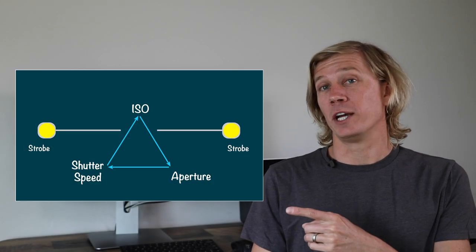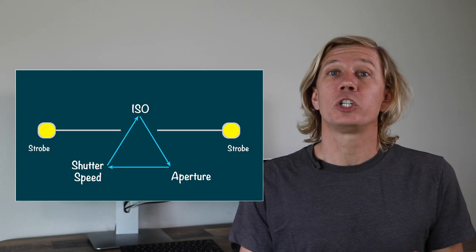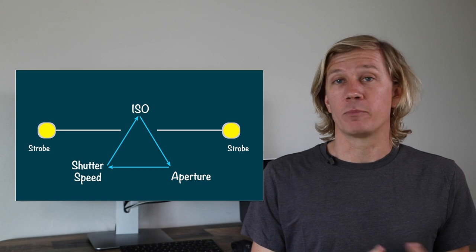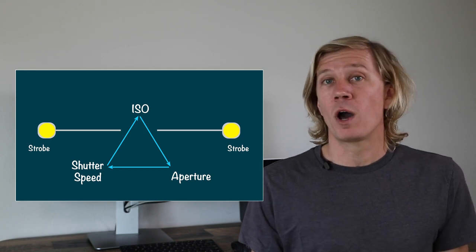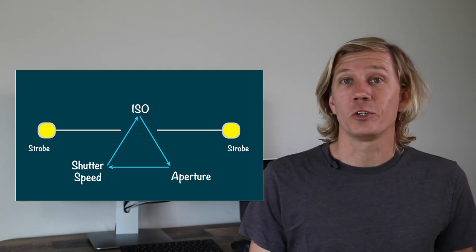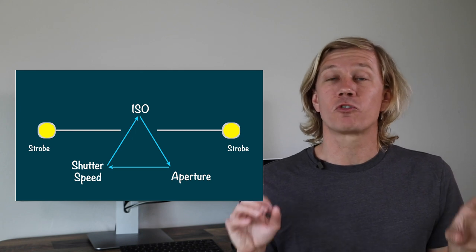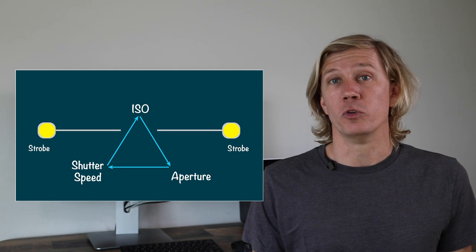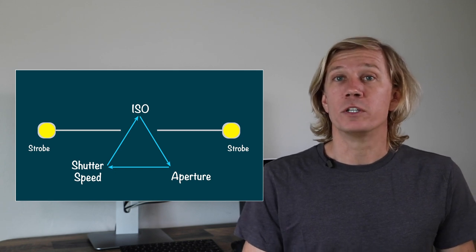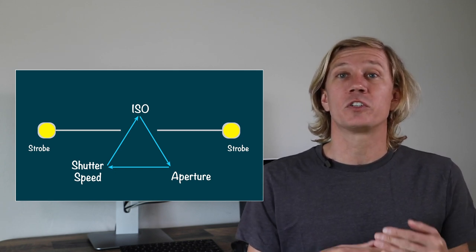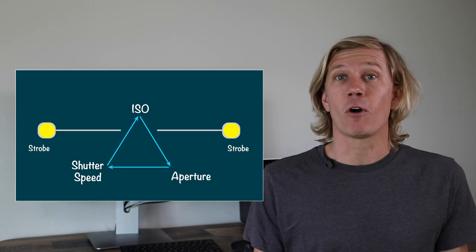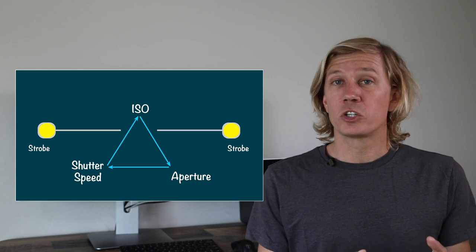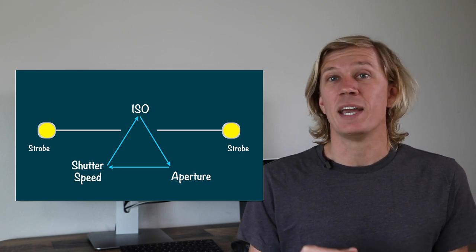Here we have the exposure triangle. ISO, shutter speed, and aperture create the fundamentals of our exposure. This is true for topside photography and for underwater photography. The only difference is that we use strobes and artificial lighting underwater, which adds another element depending on how we're going to shoot. As we start adjusting the settings away from our default jump settings, we need to understand this relationship in order to make adjustments.